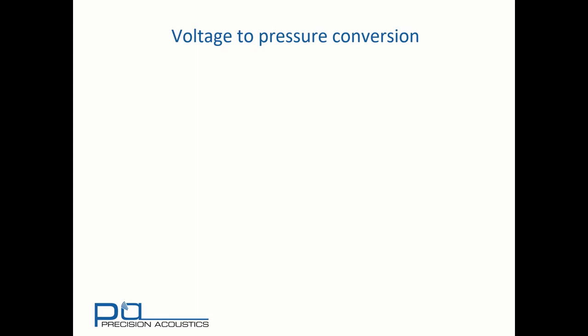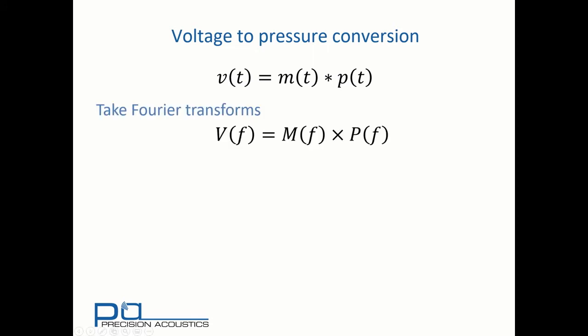Let's look at that voltage to pressure conversion process. Starting with our convolutional description, we take Fourier transforms. Capital letters are used to indicate Fourier transformed frequency domain versions of the time domain quantities.